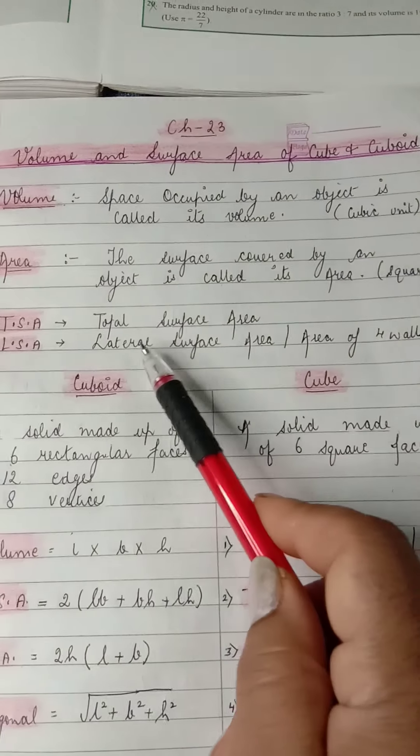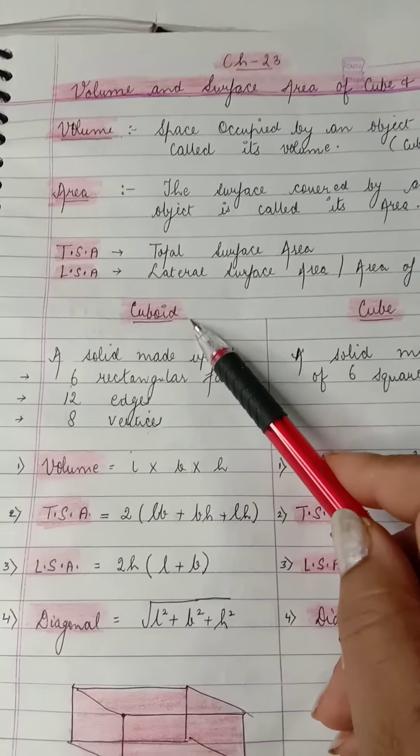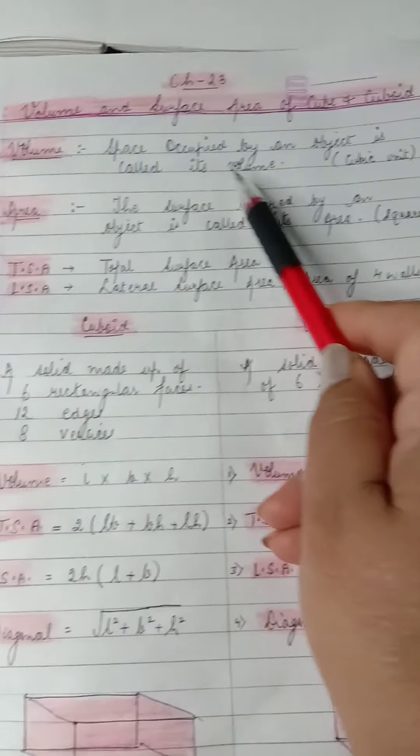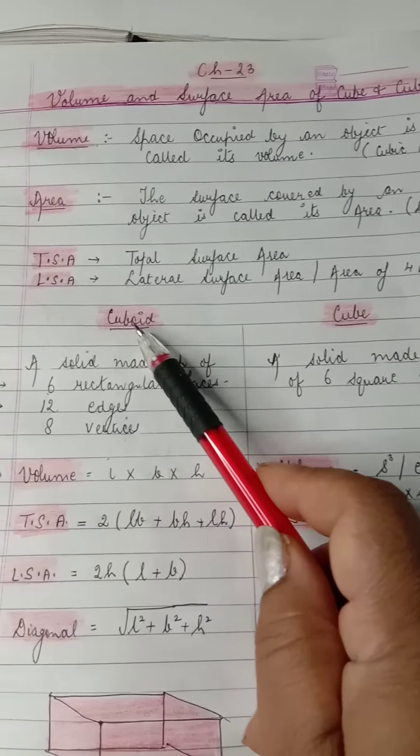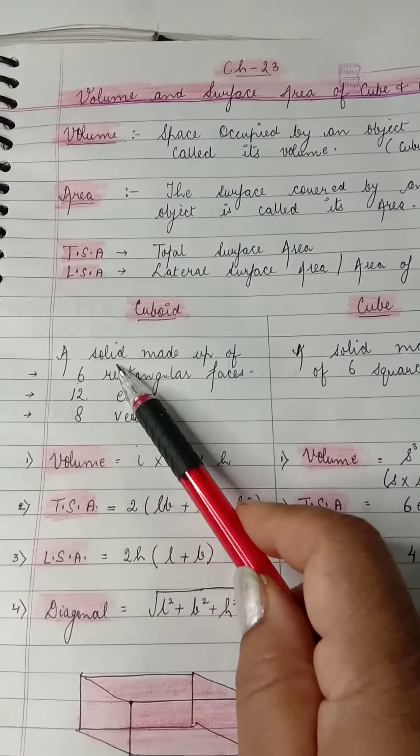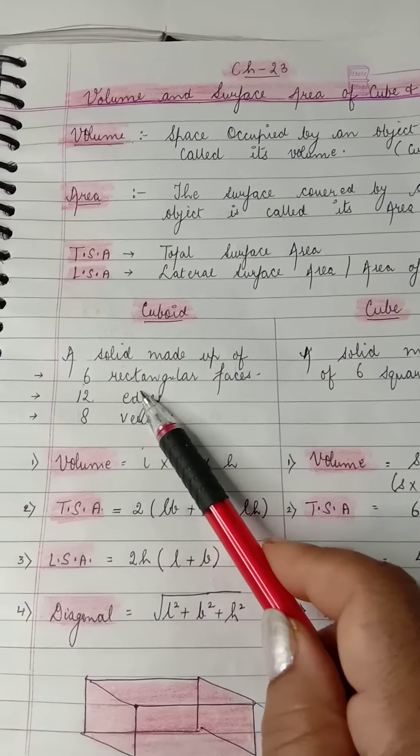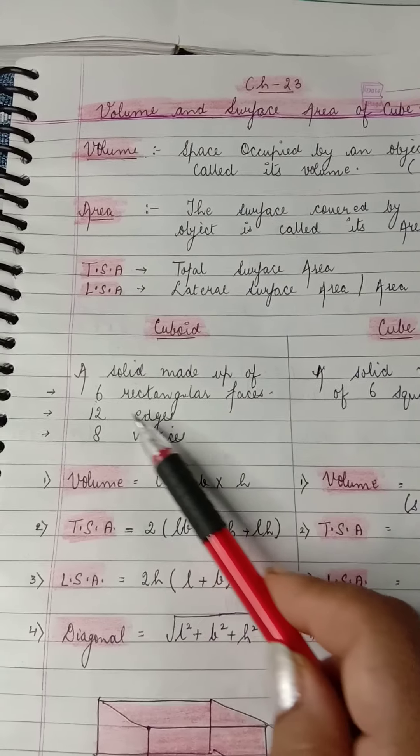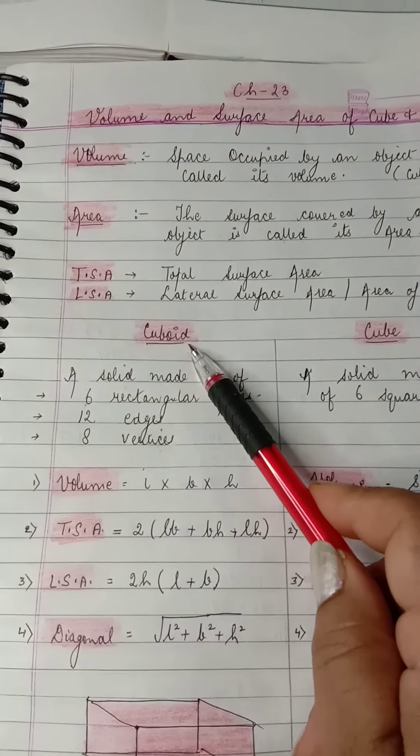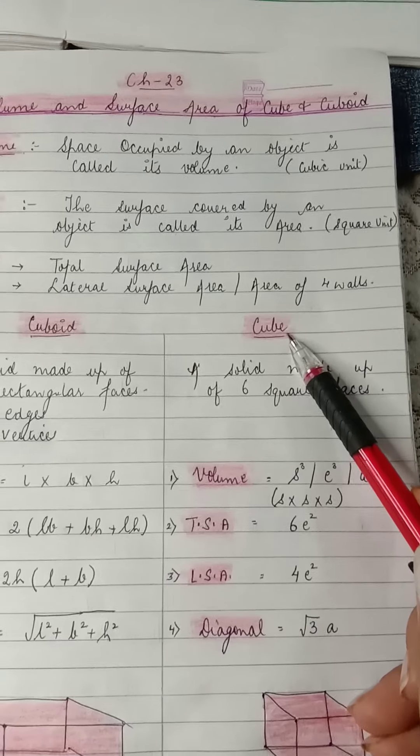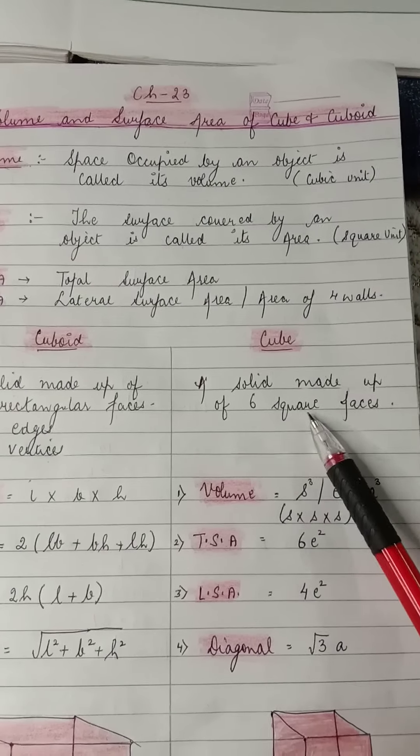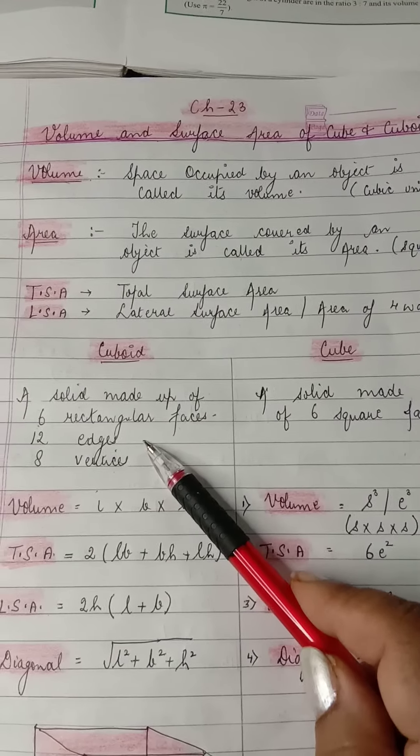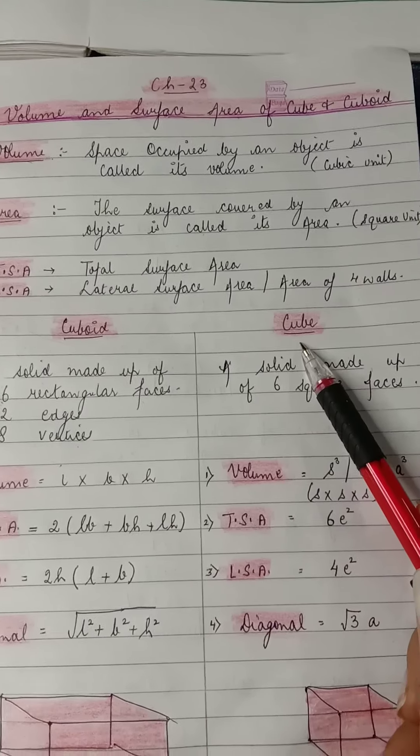The top is the ceiling, the bottom is the floor, and the four walls is termed as lateral surface area. Now what is a cuboid? Any solid figure which is made up of six rectangular faces having 12 edges and 8 vertices is called a cuboid. And any solid figure which is made up of six square faces having 12 edges and 8 vertices is called a cube.